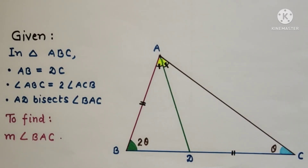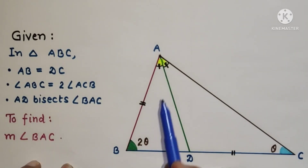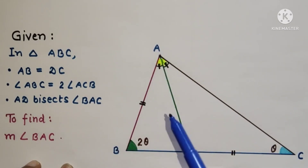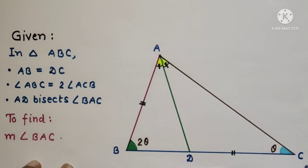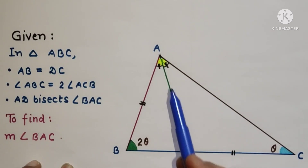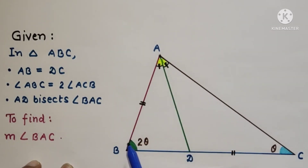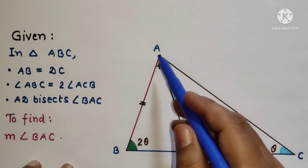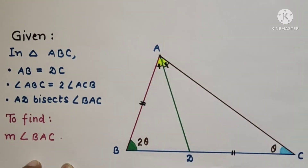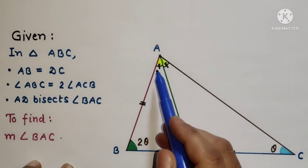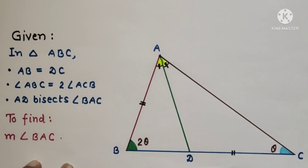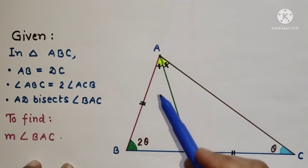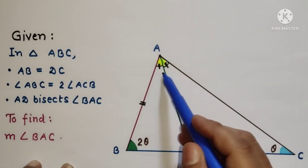In this question we are given a triangle ABC in which AB is equal to DC, and angle ABC is twice angle ACB. Also, AD bisects angle BAC, meaning this angle is equal to this angle. We have to find the measure of angle BAC.